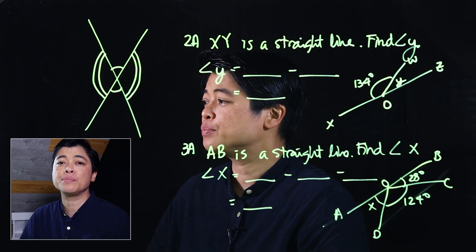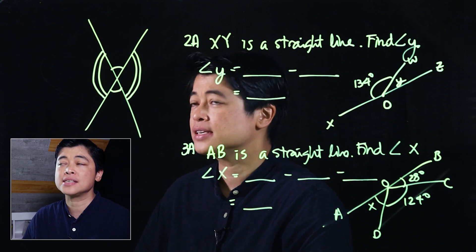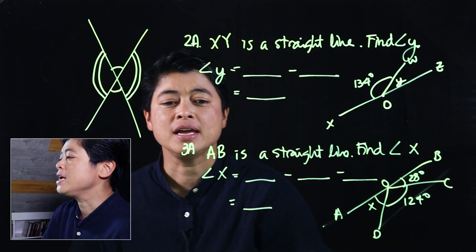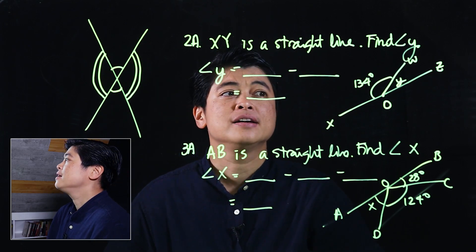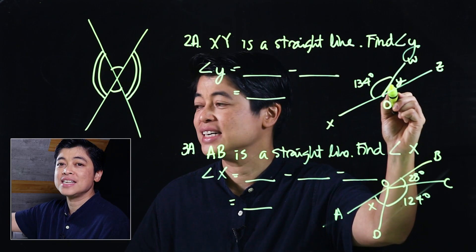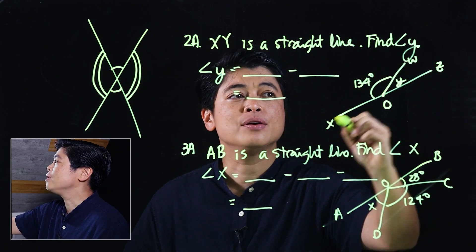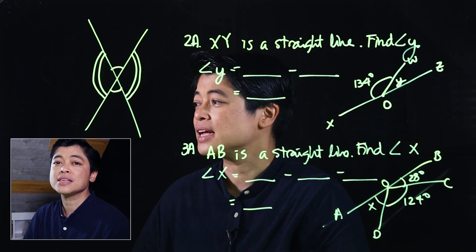Problem 2A of page 103 says XY is a straight line, find angle Y. Since this is a straight line, we know that these two angles add up to 180 degrees.